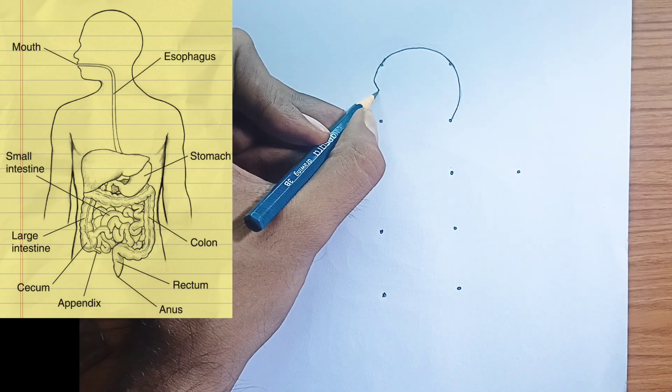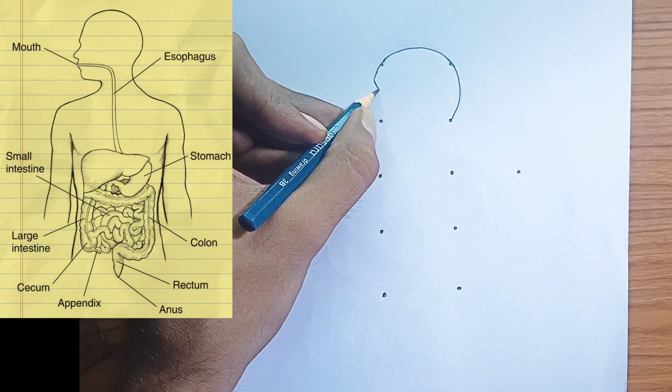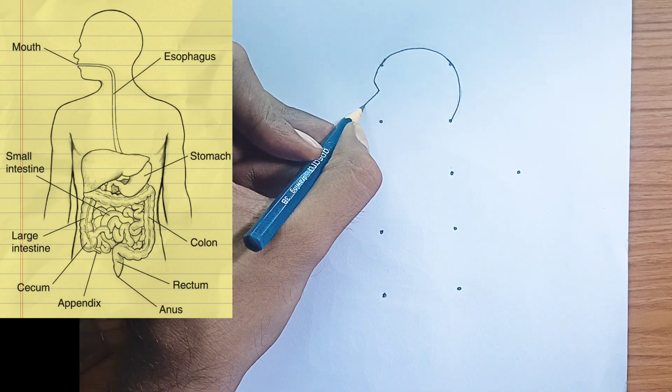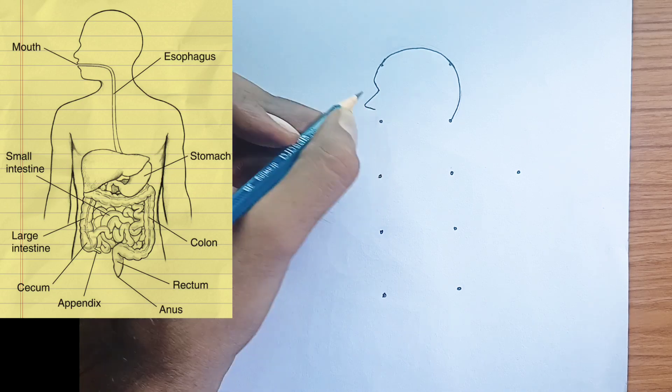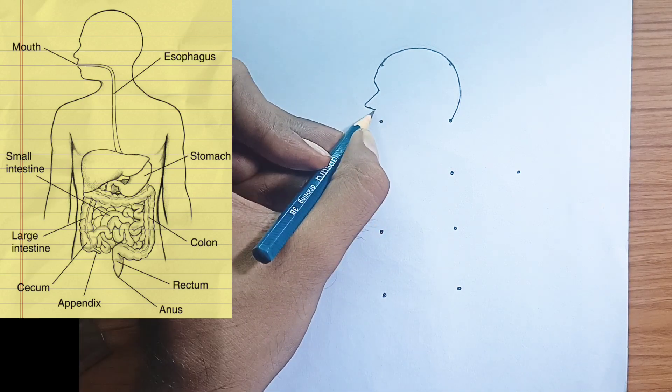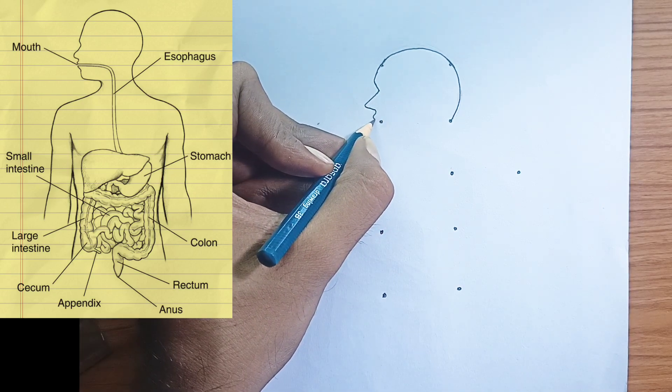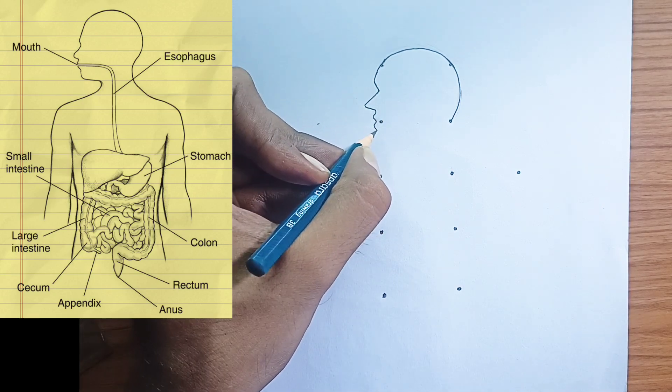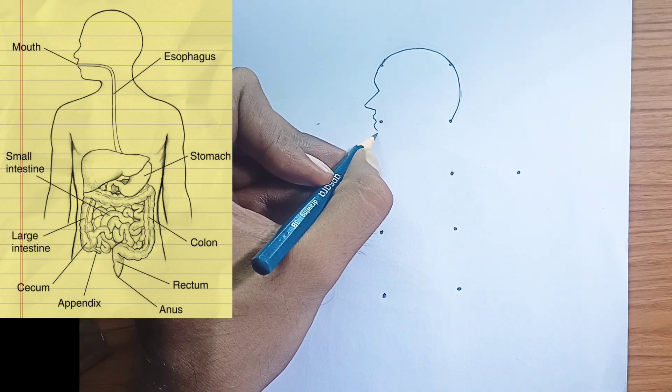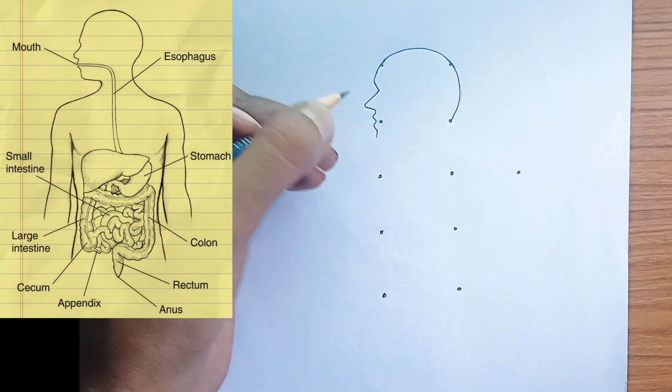Esophagus: a muscular tube that connects the mouth to the stomach. It transports food through peristalsis, wave-like muscle contractions.